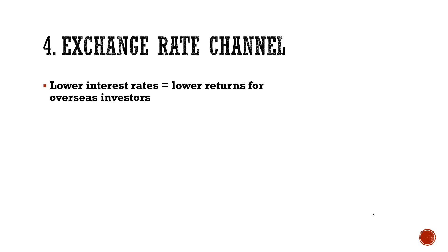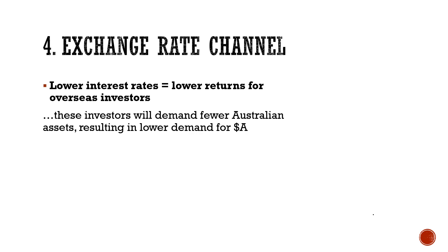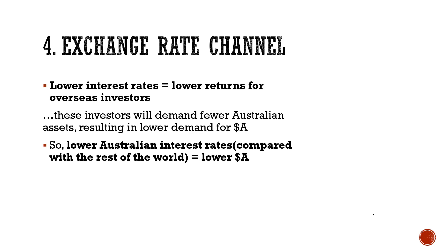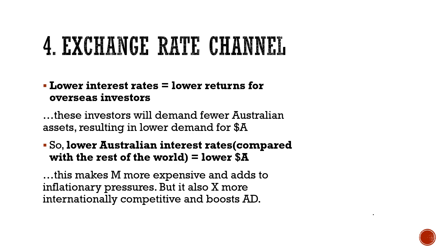Our final channel of the transmission mechanism is about exchange rates. Changes in the cash rate will affect exchange rates. For example, if Australia has lower interest rates, that will lead to lower returns for overseas investors — they'll take their money elsewhere, reducing demand for the Australian dollar and reducing its value. If Australian interest rates are lower compared to the rest of the world, that will also reduce the value of the Australian dollar. A lower Australian dollar makes imports more expensive, adding to inflationary pressures, but it also makes exports more internationally competitive and can boost aggregate demand.